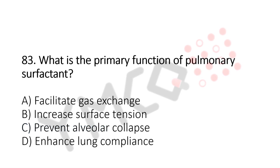What is the primary function of pulmonary surfactant? Option A: facilitate gas exchange. Option B: increase surface tension. Option C: prevent alveolar collapse. Option D: enhance lung compliance. And the answer is option C, prevent alveolar collapse. Now let us move to question number 84.